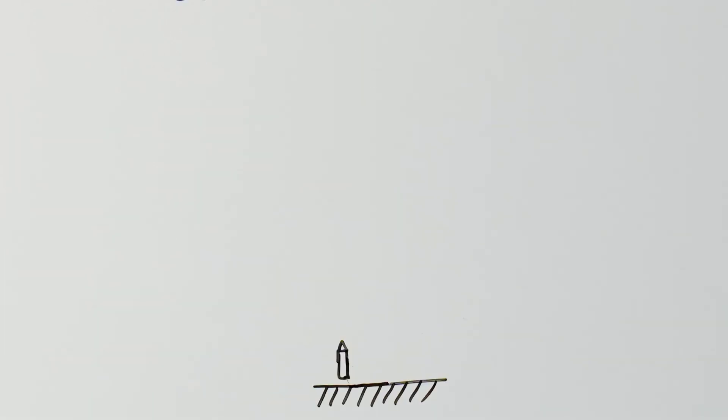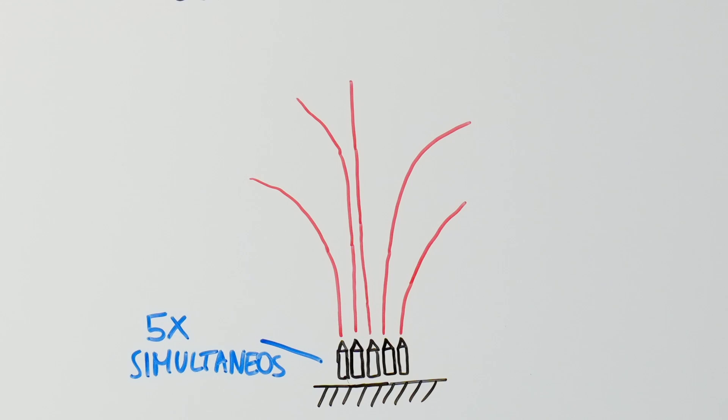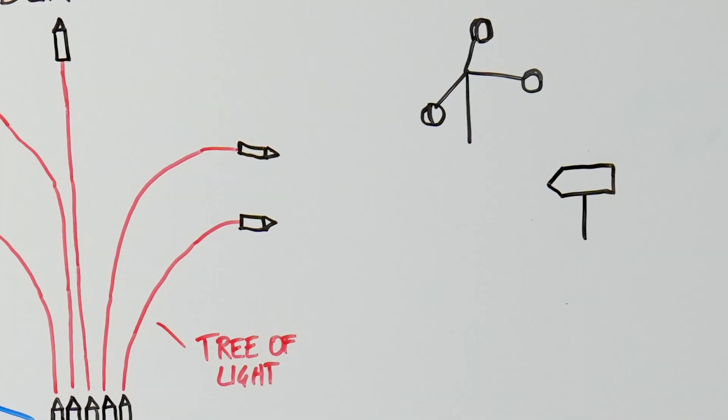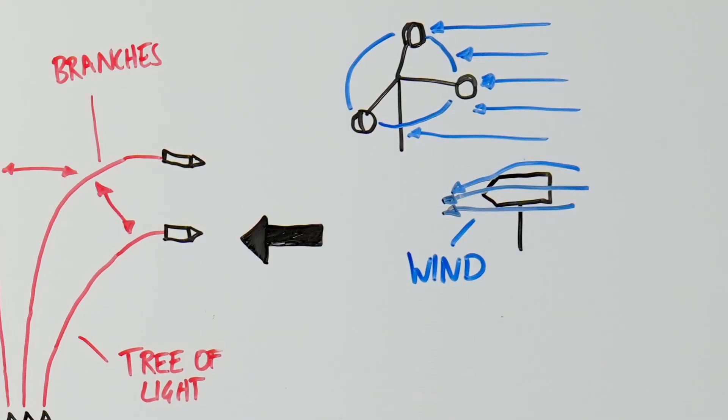The plan was ambitious, launch five rockets simultaneously to craft this light tree. To do that, we needed just the right amount of wind to spread the flight paths like branches.